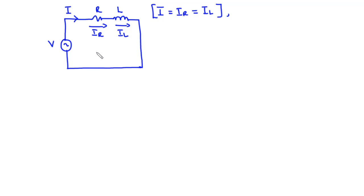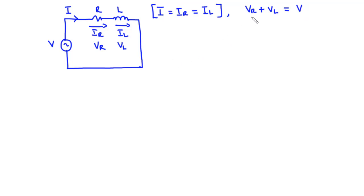Let's consider the voltage across R to be VR and the voltage across L to be VL. Now considering Kirchhoff's voltage law, the sum of the voltages dropped across the loop equals the source voltage VN. Therefore, VR plus VL equals VN. So how do we find the impedance of this circuit and also the phase angle between the current and the voltage?